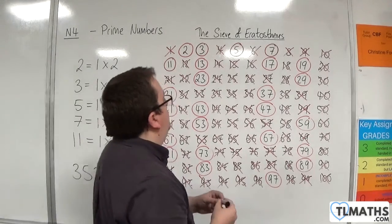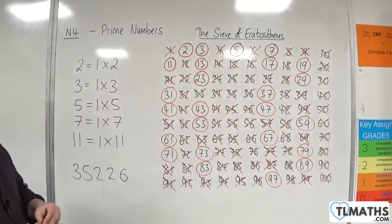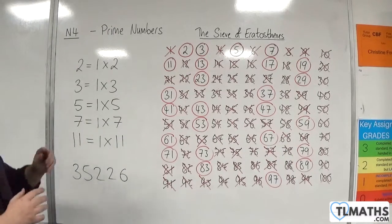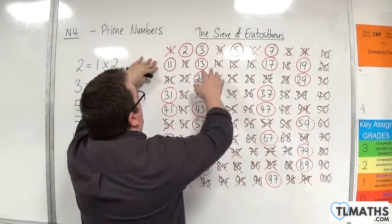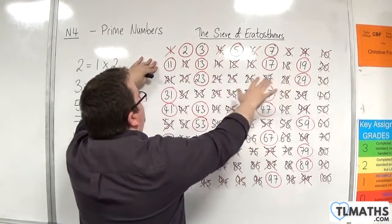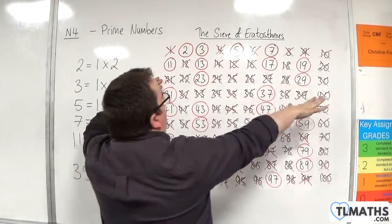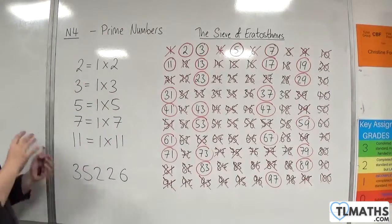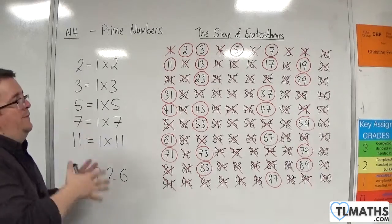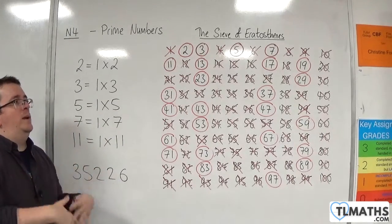But I would expect you to know probably, definitely two, three, five, seven, eleven. I'd expect you to probably know up to thirty. So the prime numbers up to thirty are two, three, five, seven, eleven, thirteen, seventeen, nineteen, twenty-three, twenty-nine.